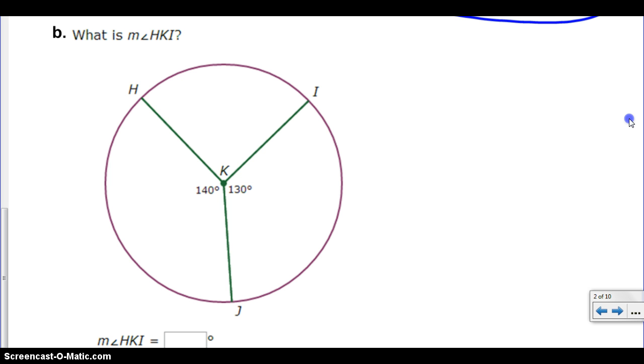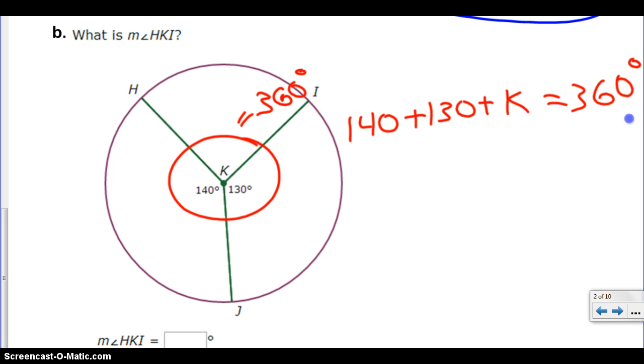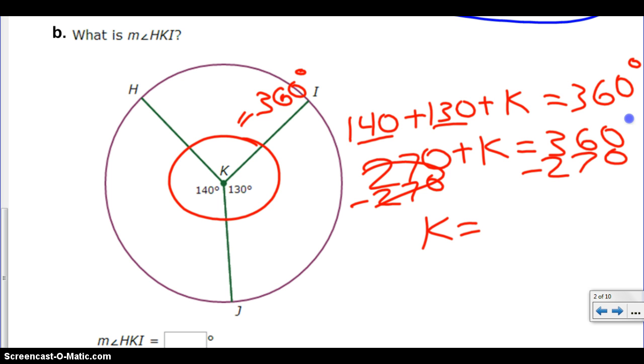So I'm looking at this one. We're doing sum of central angles. So these three angles right here are all going to add up to 360 degrees. So I guess what I'm going to do from here is I'm going to take 140, add that to 130, and then add that to k because I don't know what that third angle is, and that should all equal 360. I combine my like terms, which is now the 140, 130. I get 270 plus k equals 360. I'm taking away 270 from both sides, and that is going to leave me with k equals 90 degrees.